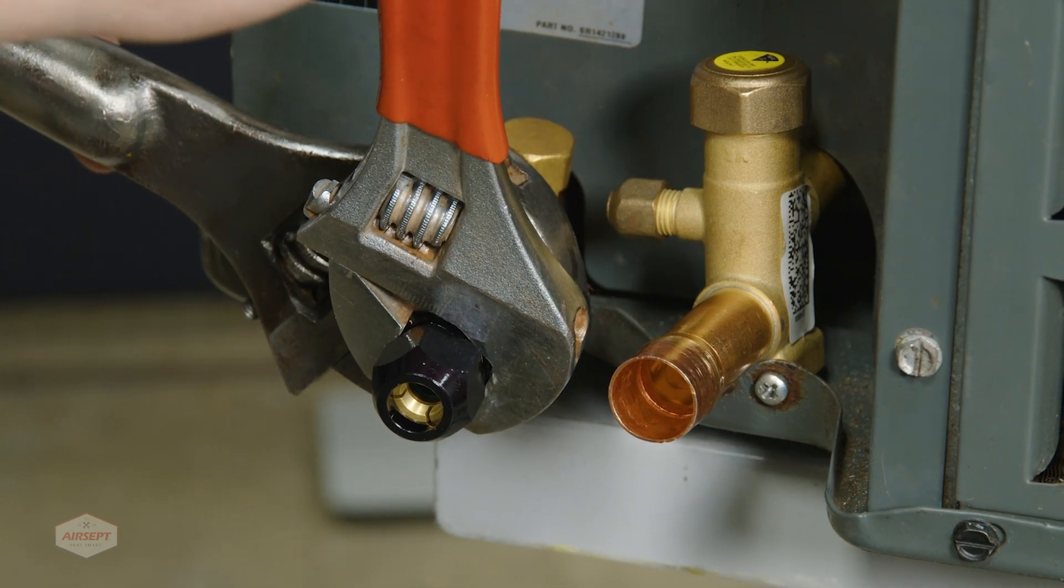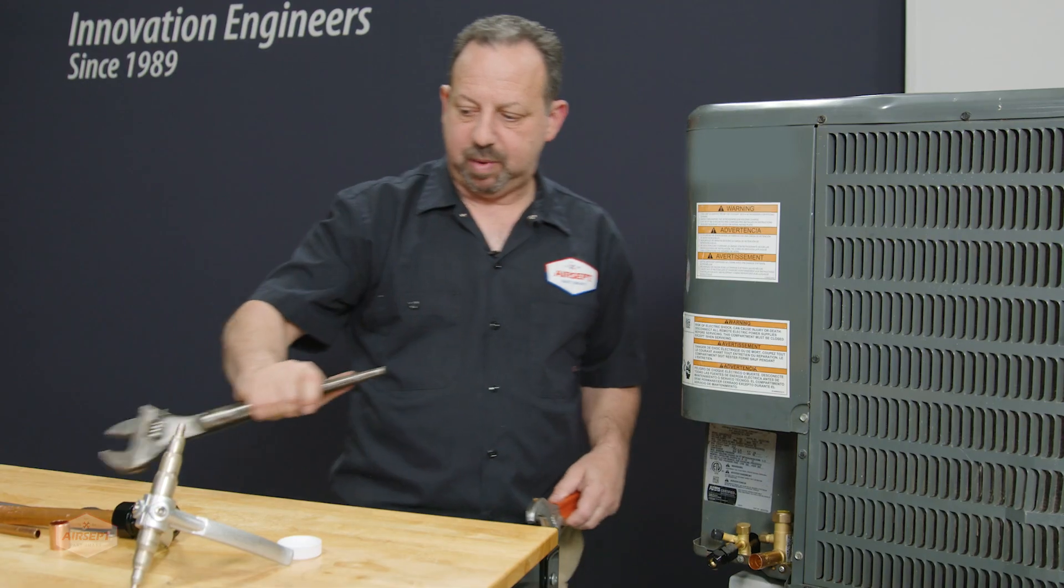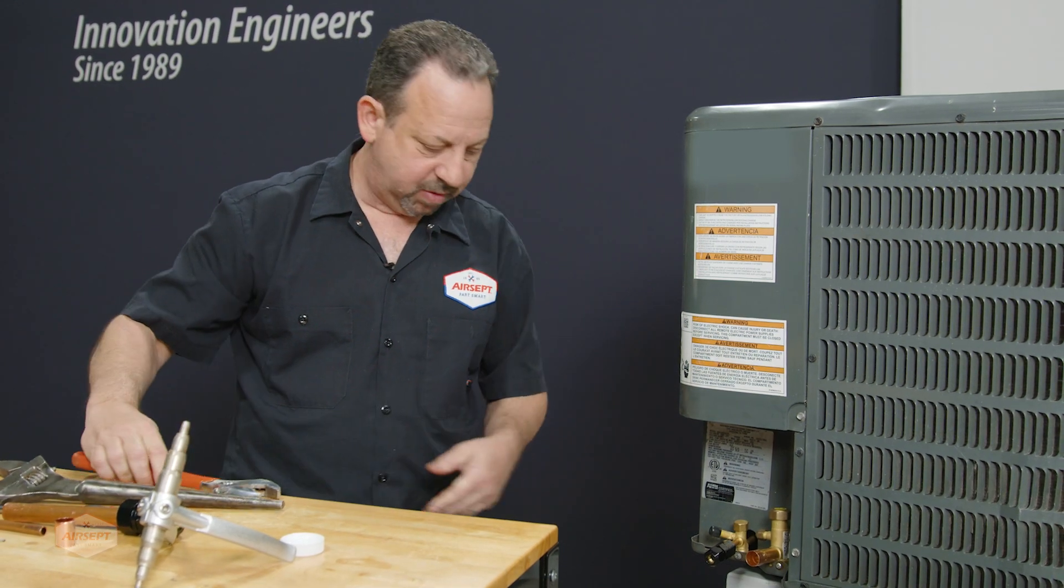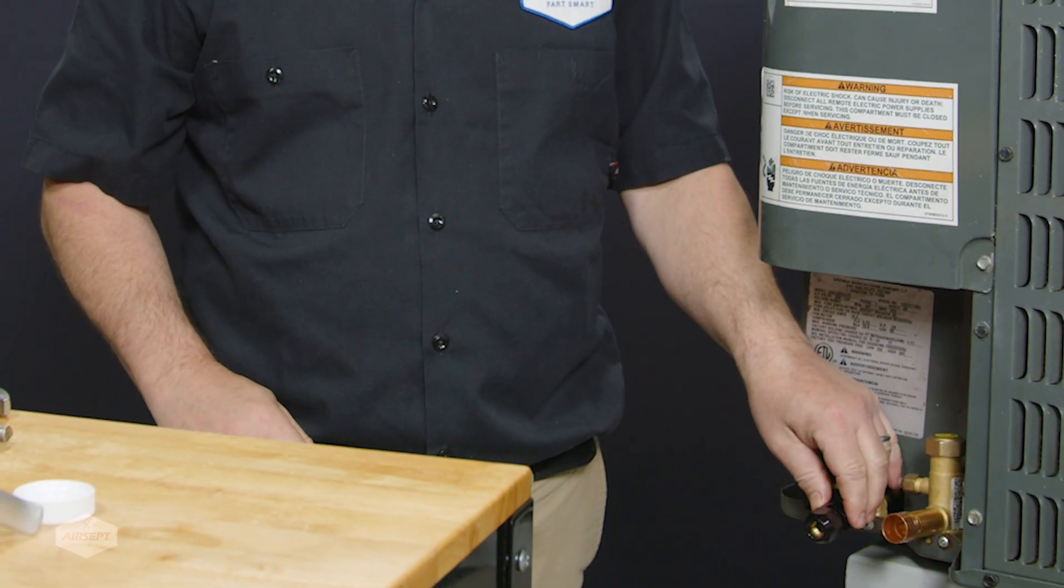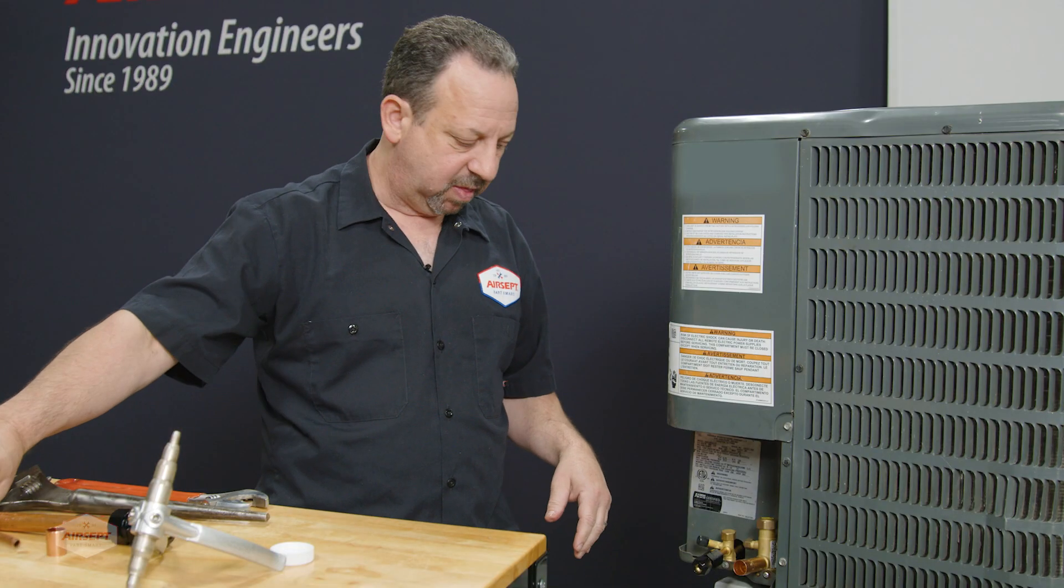And there we are. Now we have attached the expanded tube side for the 3/8 on the service valve over the bell. Now it's time to attach the line.